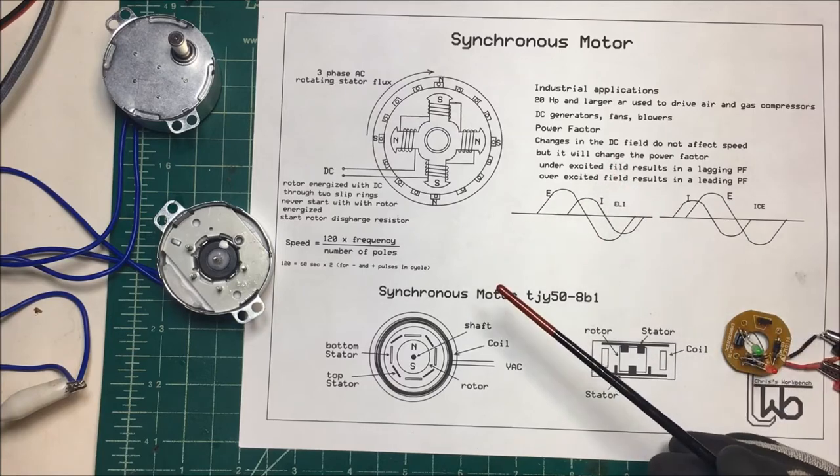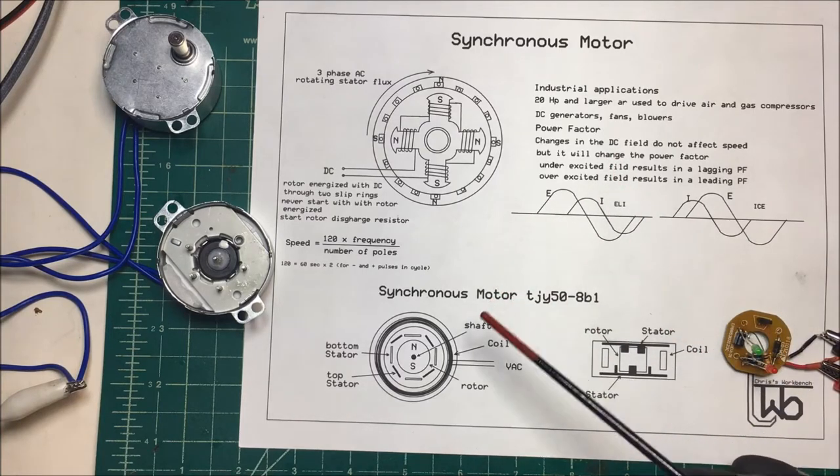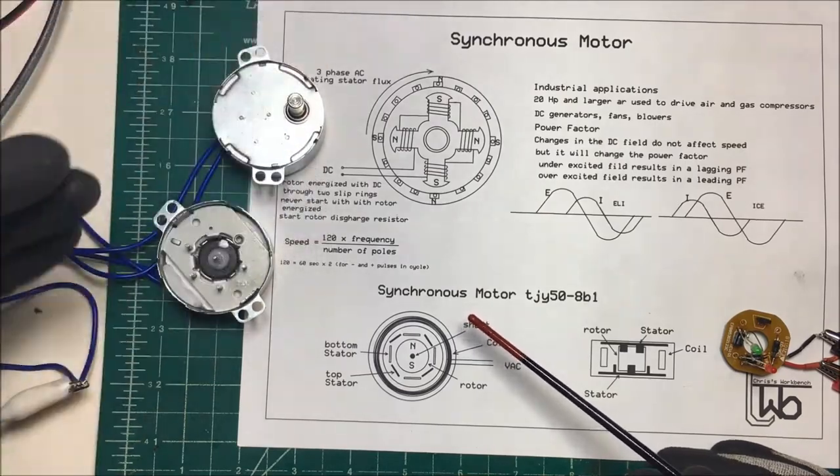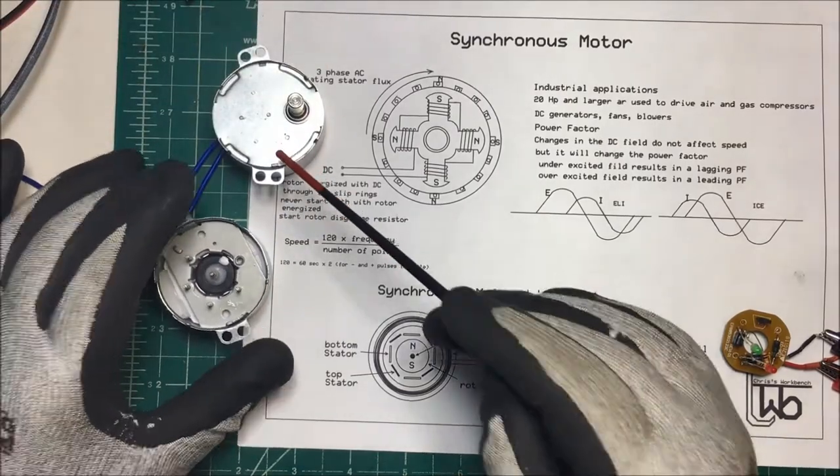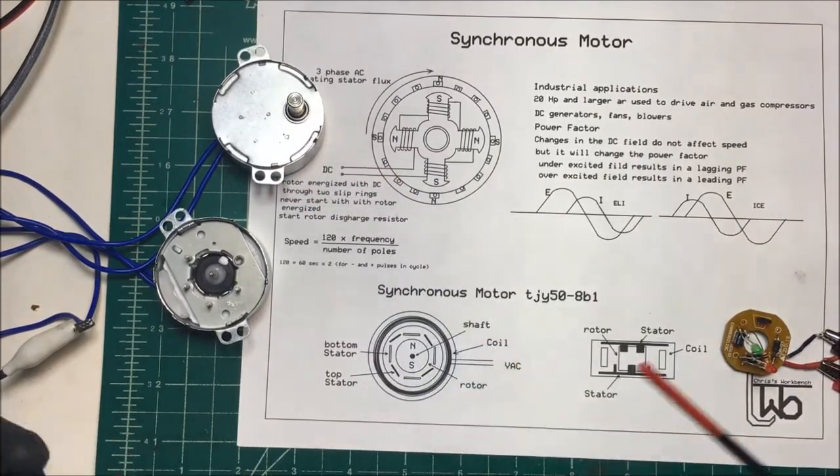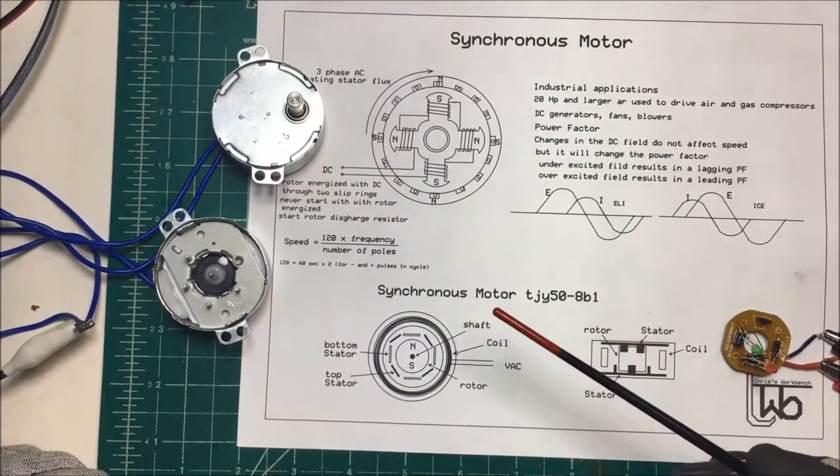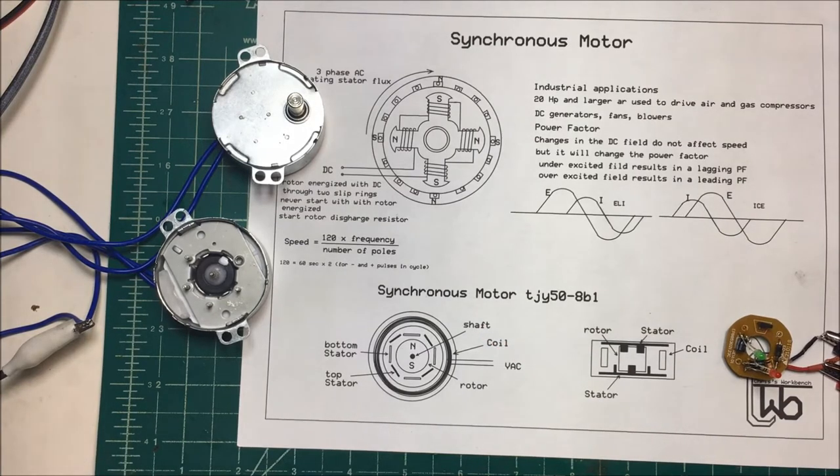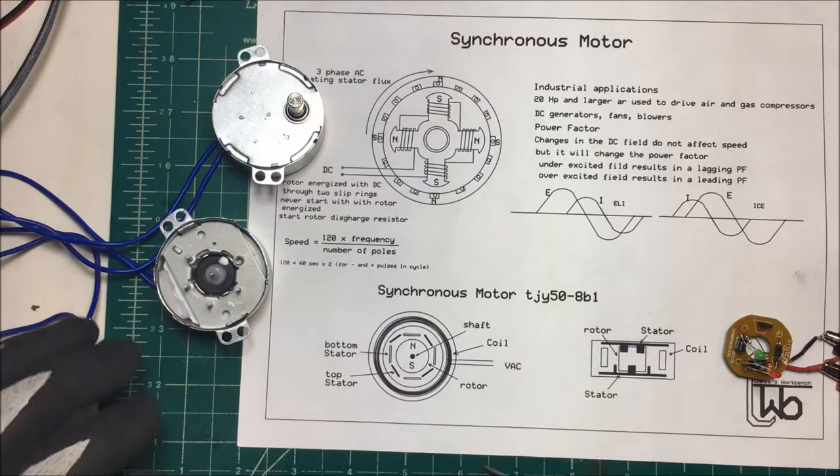Now let's take a look at these little synchronous motors here. These are very cheap and they're used to run turntables because the speed is dependent on the frequency, and usually the frequency is pretty stable from the power company. How these work is that the rotor, instead of having it powered, is just a magnet.